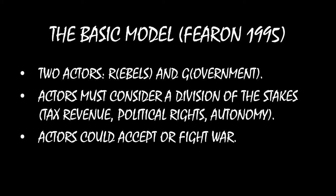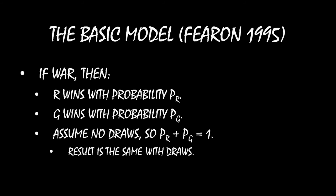Let's model the war outcome. If there's war, the rebel group wins with probability PR and the government wins with probability PG. For simplicity, let's assume there aren't any draws, so PR plus PG equals one — 100% of the time, either the rebels win or the government wins. This is an innocuous assumption; the same results hold even with draws, it would just be slightly more complicated to show.